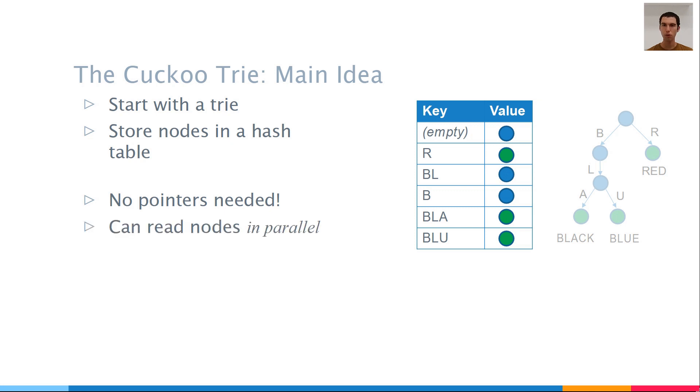Second, and perhaps more important, our memory accesses are now independent. This means that we can read nodes in parallel. When we search for a key, say in black, the nodes that we read are exactly the prefixes of that key. This means that we know the names of the required nodes when we start the search, and we can read all of them in parallel. We don't have to wait for one read to finish before we start the other.